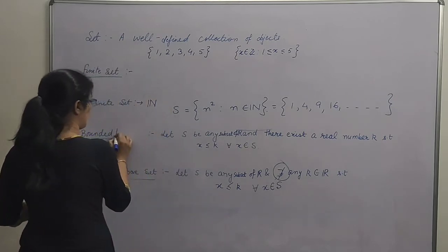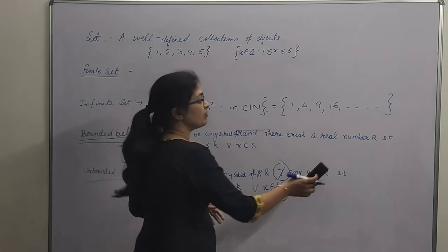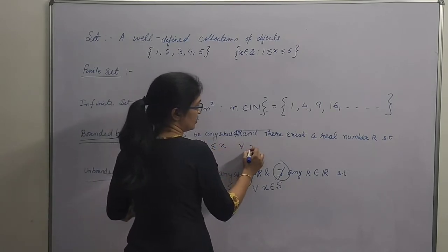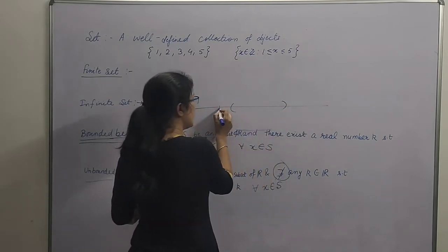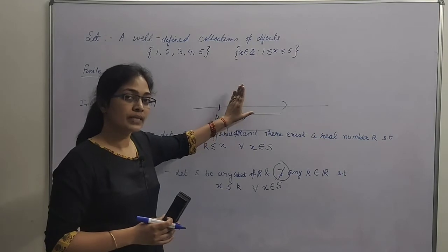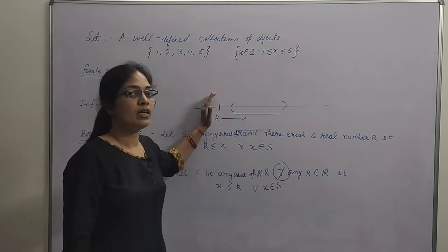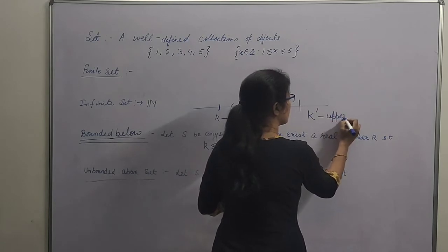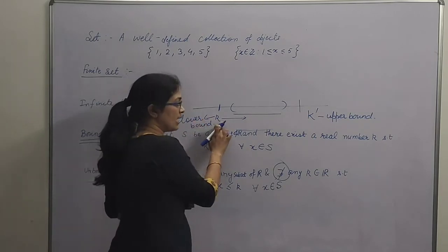Now, what do you mean by bounded below? Agar hum bounded above ki jagah bounded below ki baat karein, uska matlab kya hoga? Agar S koi bhi subset hai R ka, and we can find out a real number k, such that all elements of the set are greater than or equal to that number, then that set is bounded below. Set ke corresponding ek aisa number mil jana chahiye jis se us set ke sare elements bade hon — ye lower side se bound kar raha hai set ko. Is number se chhote is set mein koi element nahi hoga. So it is a lower bound.